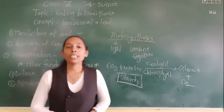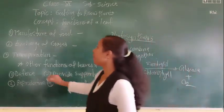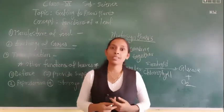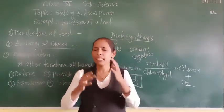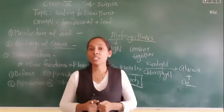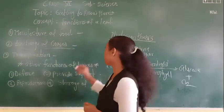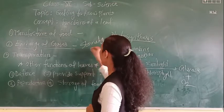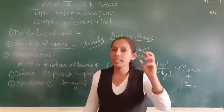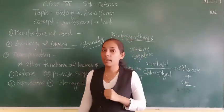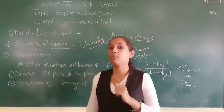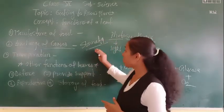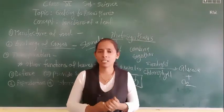Now we will see the next function of the leaves — exchange of gases. As we know, on the surface of leaves there are very tiny small holes called stomata. Stomata are the small or tiny openings on the leaves. With the help of stomata, plants also do the breathing process. Through stomata, plants can exchange different gases. The plants do the respiration process — taking in oxygen and releasing carbon dioxide — and they also carry out photosynthesis, taking in carbon dioxide and releasing oxygen.